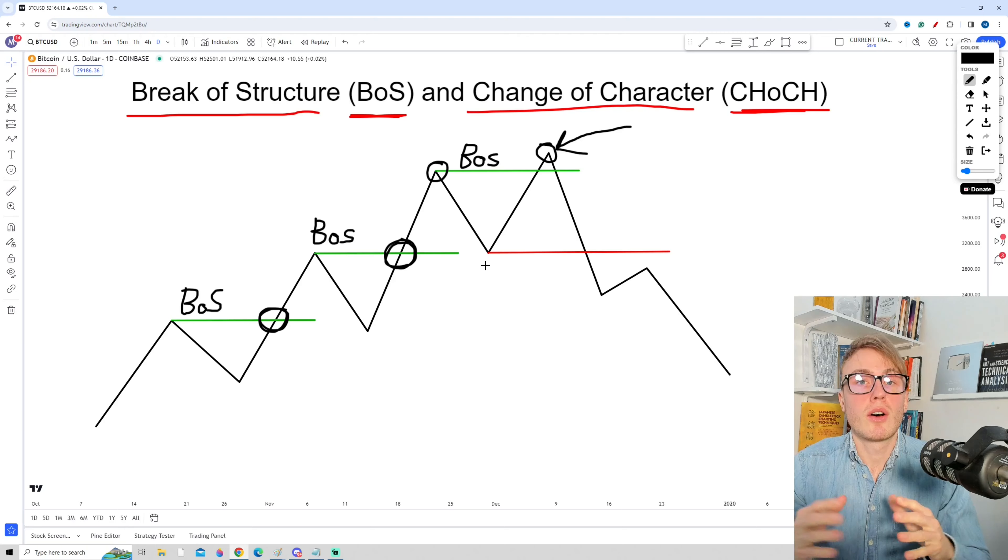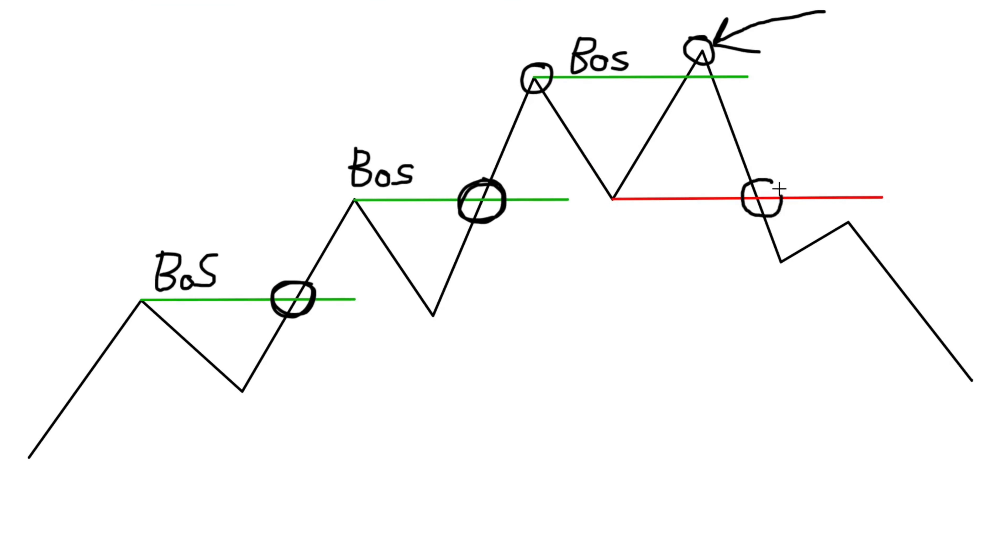On the other hand, a change of character happens when the price can no longer maintain the trend. You can actually see at this point right here the price broke below the major low. In order to have an uptrend we need to print higher highs and higher lows. So when we break below this point we are no longer in an uptrend, so this right here is a change of character.